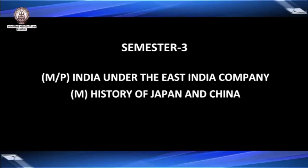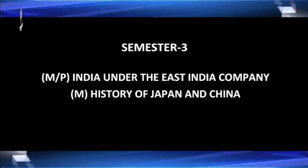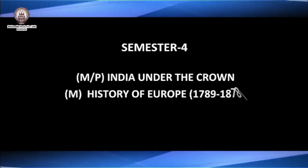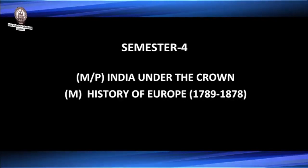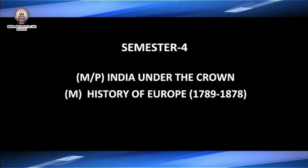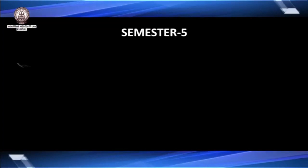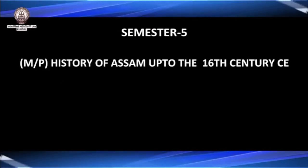The second paper in semester three is the history of Japan and China. In semester four, the learner will study two papers: India under the Crown, and history of Europe from 1789 to 1878. Moving on to the fifth semester, it consists of four papers. The first is history of Assam up to the 16th century.